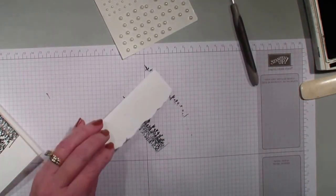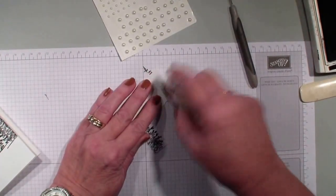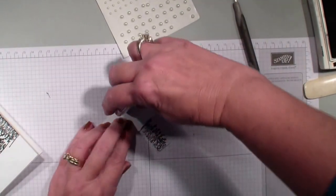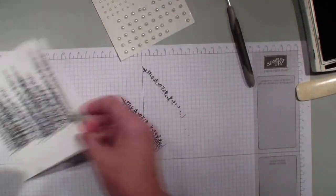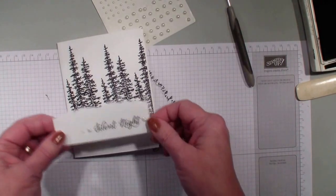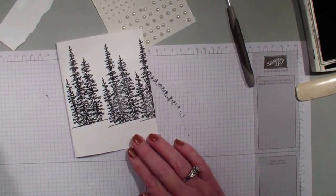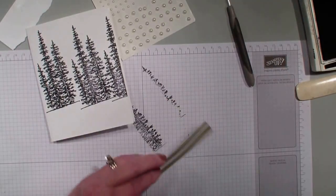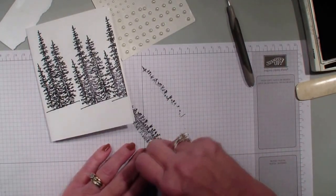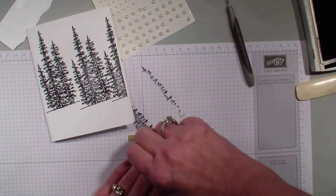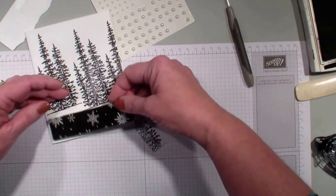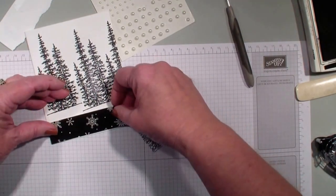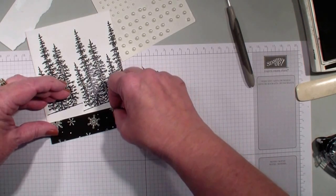I'm going to add some adhesive and place that at the base of my trees. You know, first, what I'm going to do is bring in that Designer Series Paper. This measures 1 inch by 4 1/4. I'm going to put that right down at the base of the card.